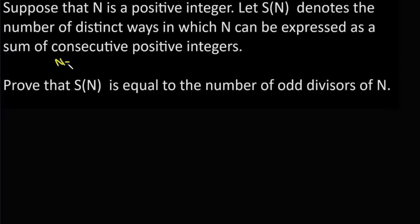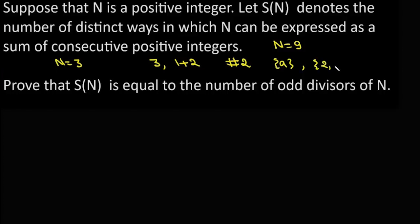For example, if n is 3, we can write it as 3 itself or as 1 plus 2, so there are two ways of writing 3 as a sum of consecutive natural numbers. If n is 9, we can write it as 9, or as 2 plus 3 plus 4, or as 4 plus 5. So in this case there are 3 ways to do it. We need to prove that sn equals the number of odd divisors of n.